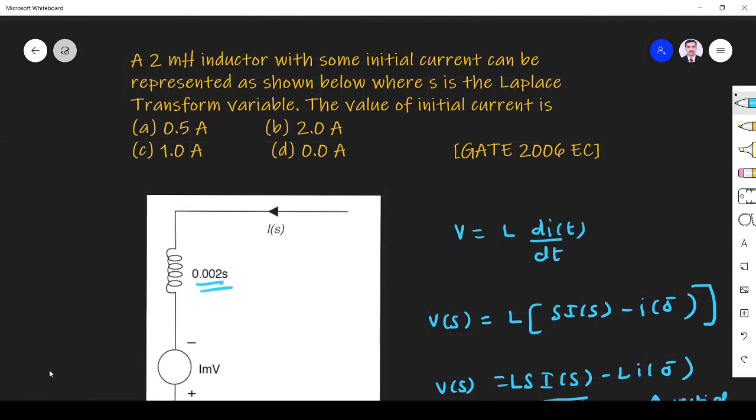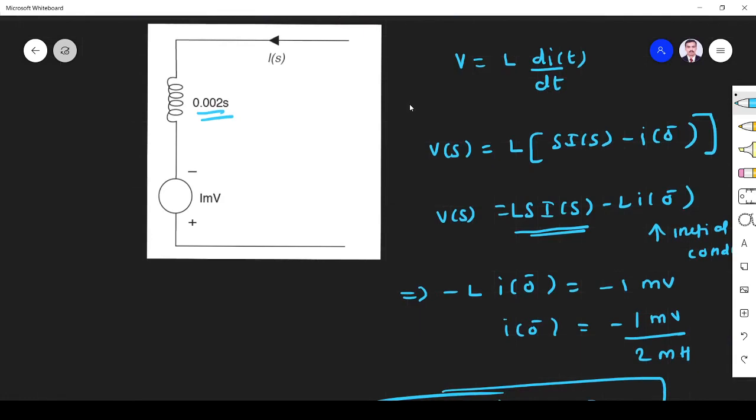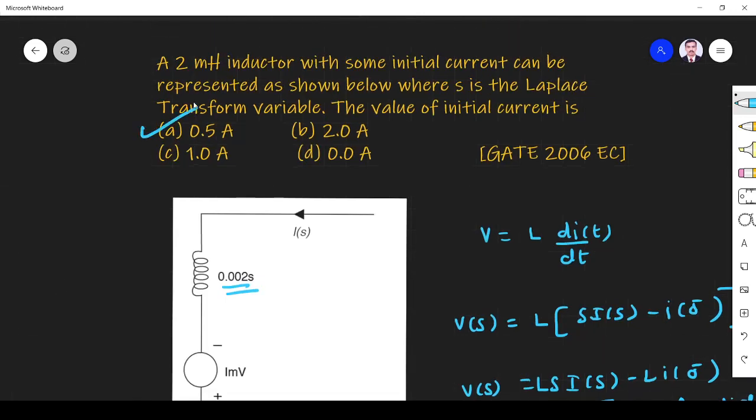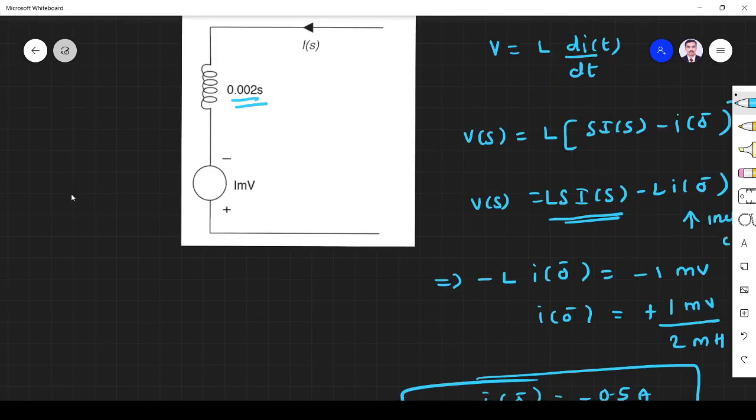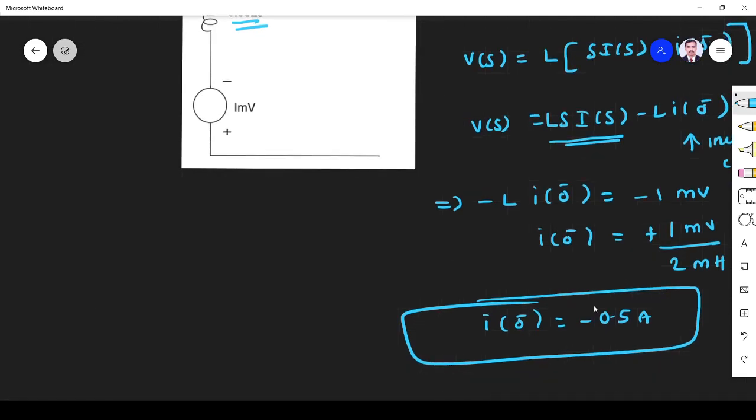So the option is, minus minus will be cancelled. So it is plus 0.5 ampere. So the answer is plus 0.5 ampere. Option A is the right answer. It is plus 0.5. Thank you.